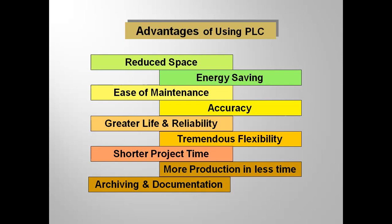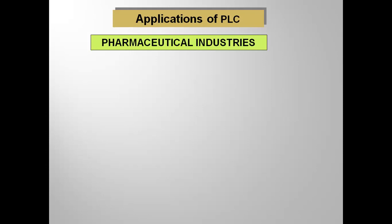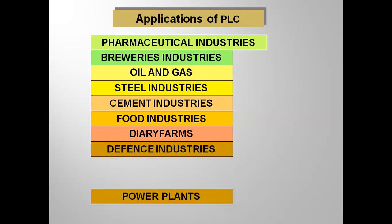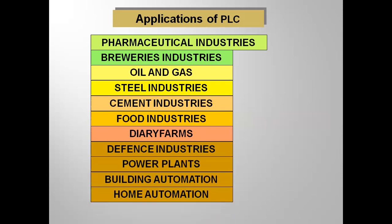There are many more advantages. You can have remote handling capacity — at long distance also you can control the process. Applications of PLC include pharmaceutical industries, breweries, oil and gas, steel, cement, food industries, dairy farms, defense, power plants, building automation, home automation. There are many areas where automation can be applied. For that we use PLCs — Programmable Logic Controllers — where we can handle large numbers of inputs and outputs and big processes.